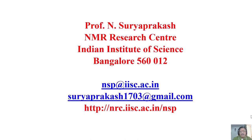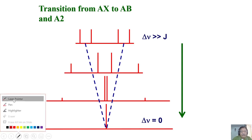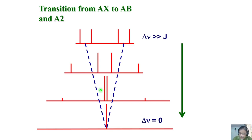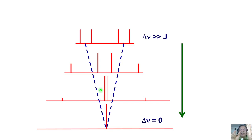Welcome back. In the last one or two classes we have been discussing the nomenclature of coupled spin systems — how to identify them using proper nomenclature. In the last class particularly, we took the example of a weakly coupled two-spin system identified as AX. I clearly mentioned that in such a coupled spin system, A will give two lines of equal intensity, X will give two lines of equal intensity, and you can get the chemical shift from the center of those doublets. The doublet separation gives you J coupling.